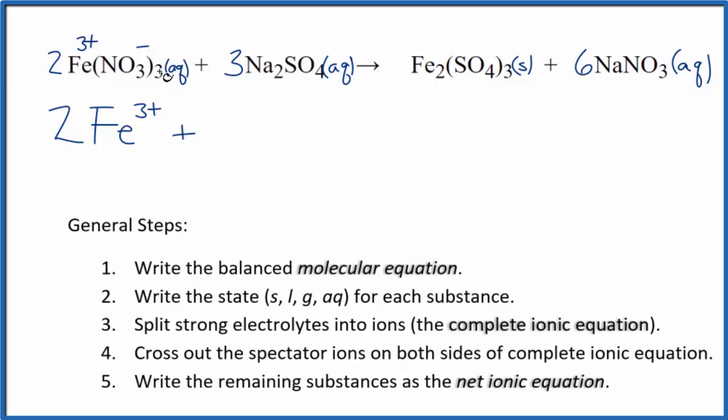Plus we have 3 of these nitrates times 2, that's 6 NO3-. And then 2 times 3, sodium is in group 1, that's 1 plus, the sulfate ion here, 2 minus. So 2 times 3, that's 6 sodium ions.